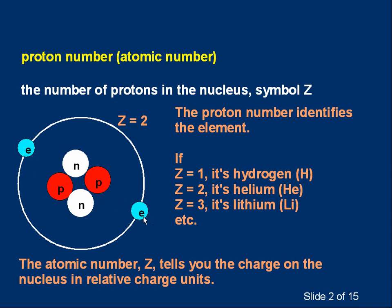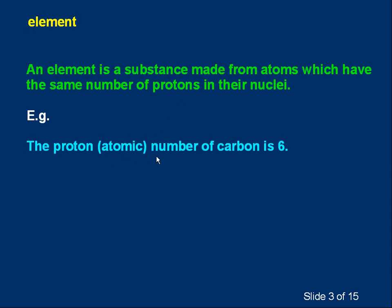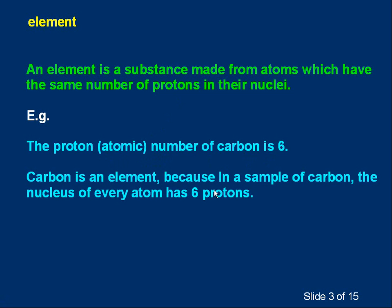But that's only true for a neutral atom. Atoms can gain or lose electrons, so you have to be a bit careful. The best way to think about atomic number is the number of protons. An element is a substance made from atoms which have the same number of protons in their nuclei. For example, the proton or atomic number of carbon is six. If it's a carbon atom, it's got six protons. Carbon is an element because, in a sample of carbon, the nucleus of every atom has six protons — all the atoms have the same proton number.